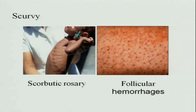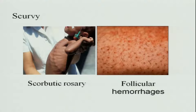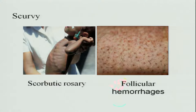Scurvy also causes beading of the ribs. Unlike the vitamin D deficiency necklace appearance, here the beading is in the opposite direction and is called the scorbutic rosary, whereas in vitamin D deficiency it is called the rachitic rosary. You can also see follicular hemorrhages, where small points of blood appear at every hair follicle — this is called follicular hemorrhage caused by vitamin C deficiency.